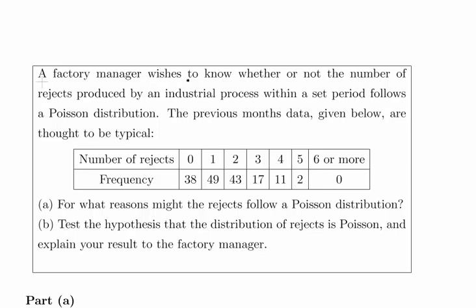A factory manager wishes to know whether or not the number of rejects produced by an industrial process within a set period follows a Poisson distribution. So this is an important phrase here: within a set period. Let's say this is a four-hour shift or something like that.